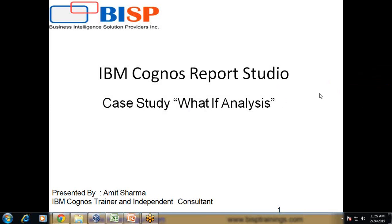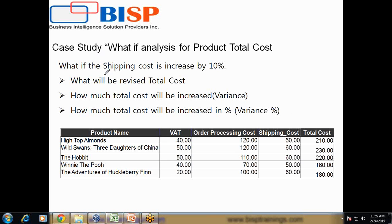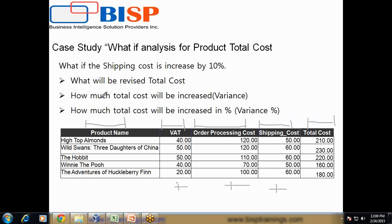Let's start understanding what the requirement is. We have a report sheet where we need to calculate expenses. I have dimensions called product name, VAT, order processing cost, shipping cost, and total cost. Total cost is in turn the sum of these three members. We need to perform a shipping cost what-if analysis.